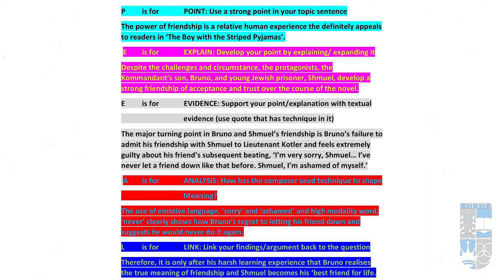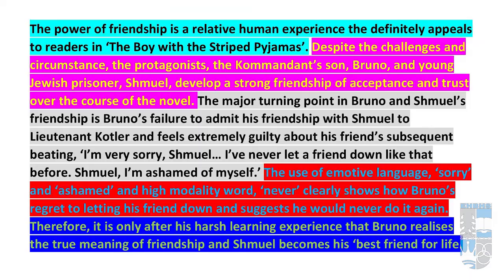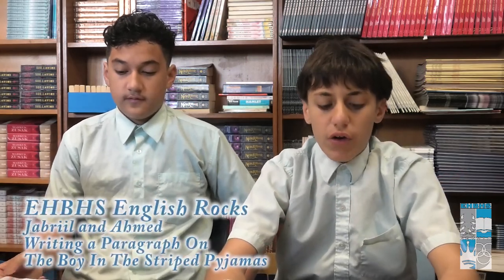Now we link it all back to the question. Therefore, it is only after his harsh learning experience that Bruno realises the true meaning of friendship, and Shmuel becomes his best friend for life. It is important that you do not simply rewrite the topic sentence at this stage. While you as the reader have learnt about the power of friendship in the novel, Bruno learns from his mistake and values his friendship with Shmuel so much more that he regards him as his best friend for life. And this is what the completed paragraph looks like. Fantastic! Don't forget — practice writing your own paragraph using this model.